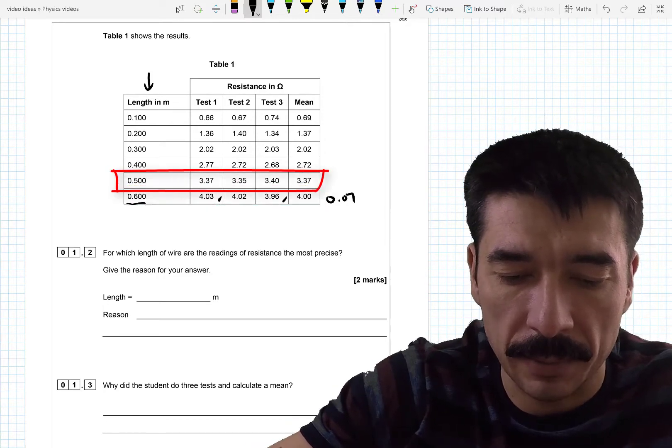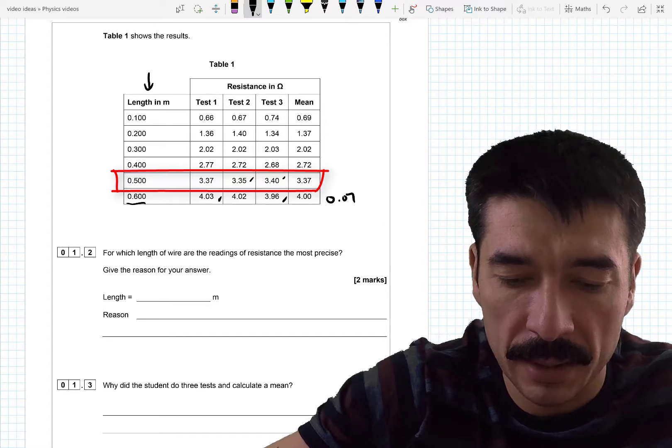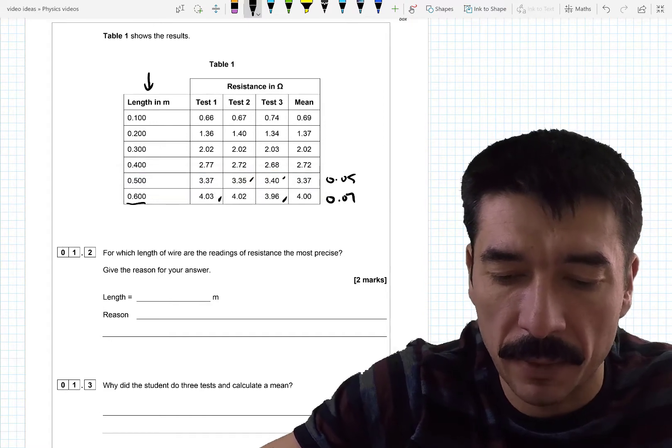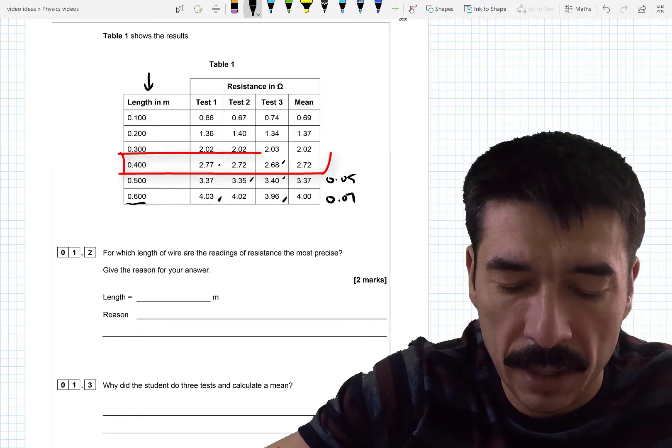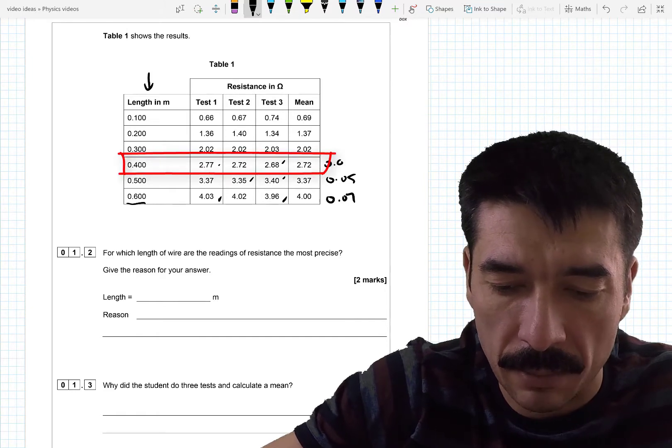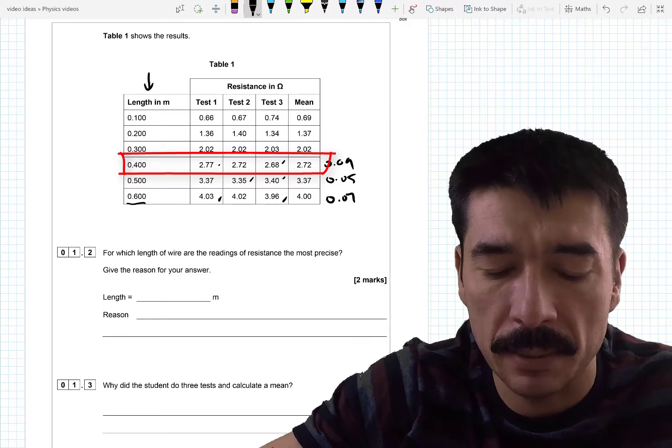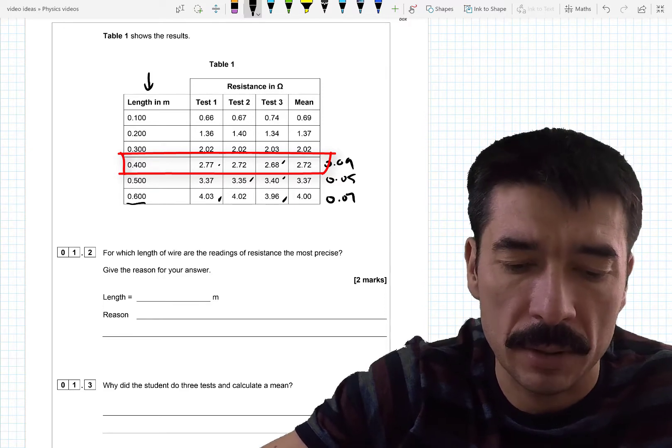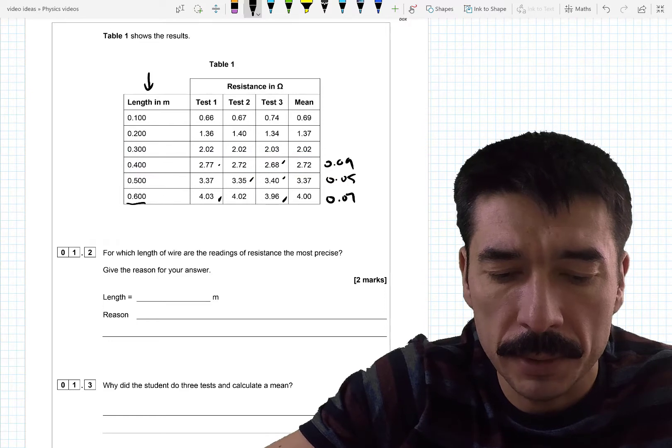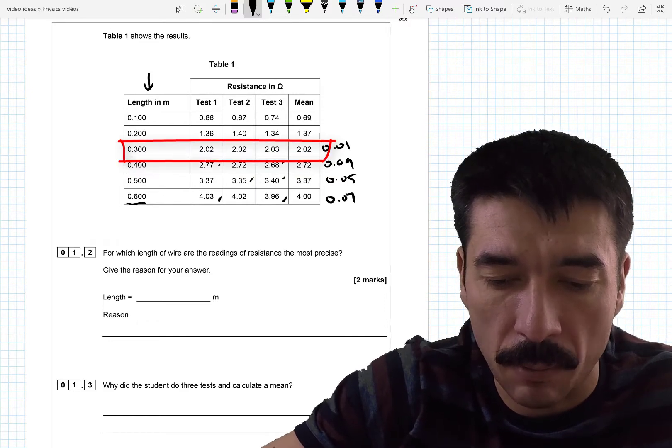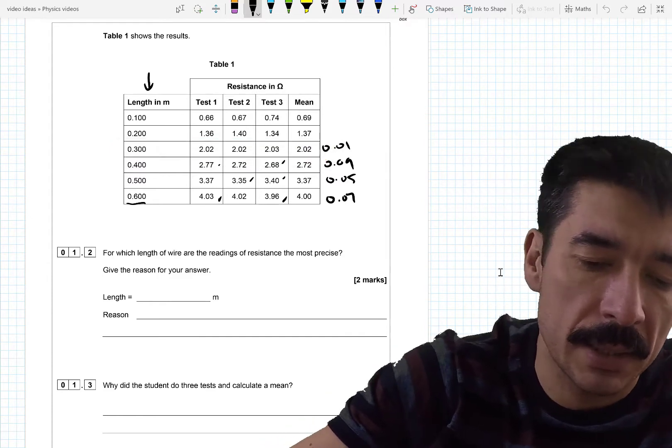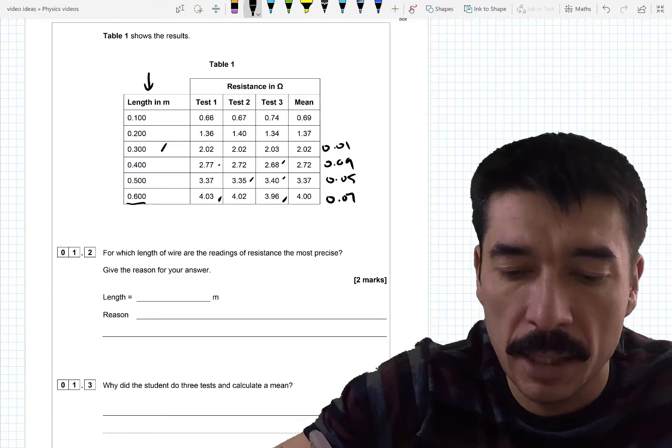The spread for this one, 0.37. What's the highest value? The lowest value is that. The highest value is that. The spread is 0.05. This one, the lowest value is that. The highest value is that. The spread is 0.09. 2.68 all the way up to 2.77. 0.02. Oh, so this one, the spread is 0.01. That's a very low spread. So this is a candidate for the highest precision.